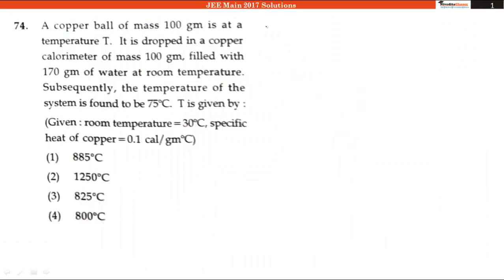The question says that a copper ball of mass 100 grams is at a temperature T. This copper ball is dropped in a copper calorimeter of mass 100 grams. The mass of the copper calorimeter is 100 grams and the mass of the copper ball is also 100 grams.